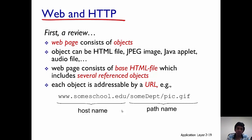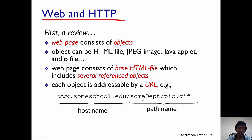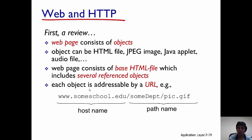Whenever you access a web page, it consists of a base HTML file. The base HTML file includes a list of referenced objects. Each object is addressed by a URL — for example, the school could be CSUMB and the department could be the CSIT department. Whenever you access a web page, each of these objects are fetched and then displayed on the browser.